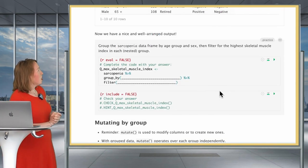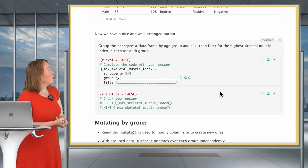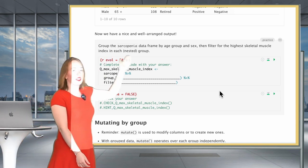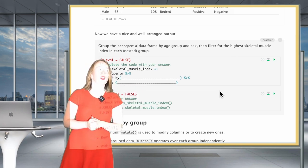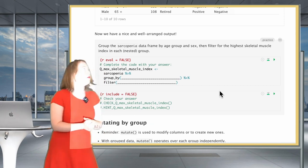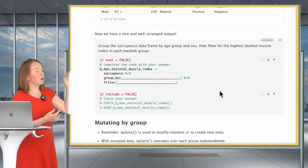It's your turn to practice. You will be grouping the sarcopenia data frame by age group and by sex. And then you will filter for the highest skeletal muscle index in each of these nested groupings.